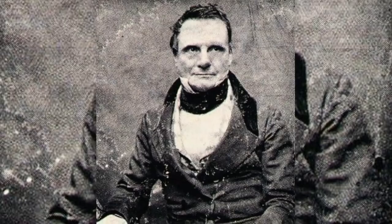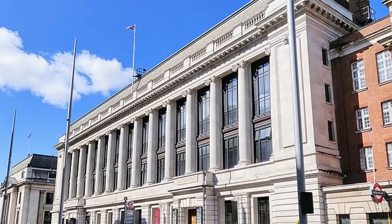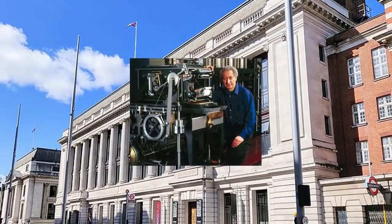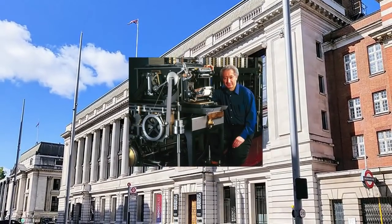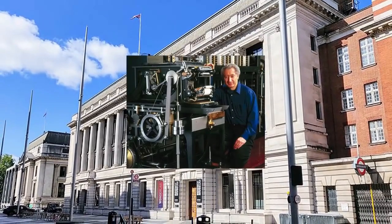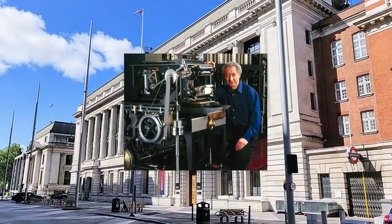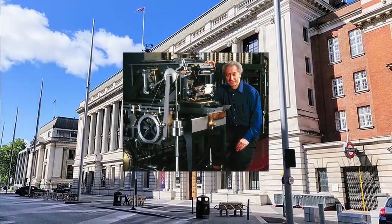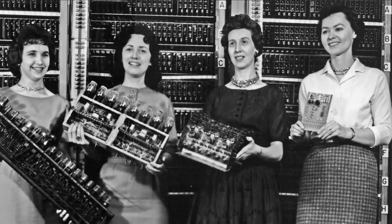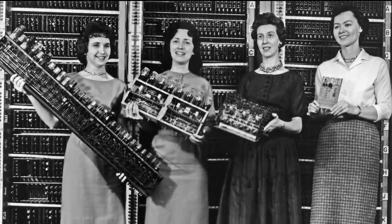The two also developed a method of printing calculations from the engine by impressing digits in plaster—the first printer. Babbage never did have the funds nor technology to produce a working model of any of his inventions. But from 1985 to 1991, Doron Swade, curator of the Science Museum in London, commissioned the construction of a working Difference Engine for the celebration of the 200th anniversary of Babbage's birth. This model worked perfectly, as did the printer he invented for it.